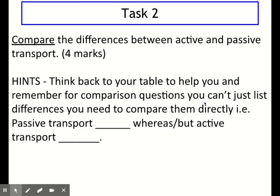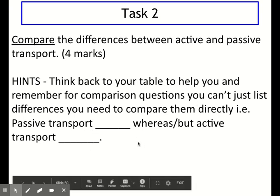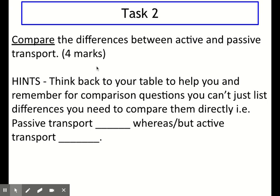For task two, this is an extended response question based on the table we've just done. It asks you for four marks to compare the differences between active and passive transport. Think back to your table and try to do it from memory if possible. Remember, for comparison questions, you can't just list differences — you have to compare them directly. It's not enough to list four things about passive transport; you need to compare directly to active transport with a structure like: 'Passive transport [something], whereas active transport [something different].' You would want four sentences like this to get your four marks. Pause the video, give the extended response question a try, and when you're ready to mark it, hit play.